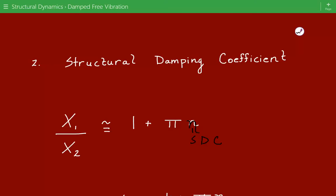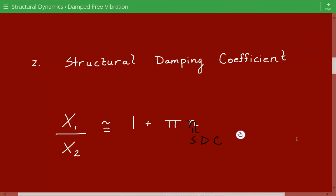And this relationship is valid for small values of eta, valid for small values of the structural damping coefficient. So we'll go ahead and use this relationship and solve for the structural damping coefficient and then check our assumption.